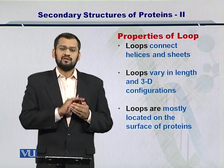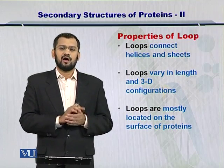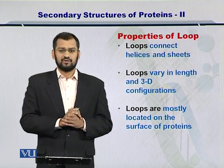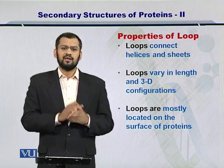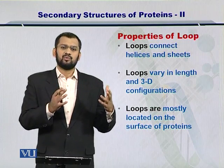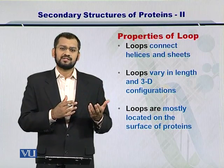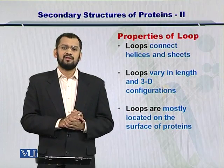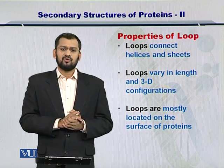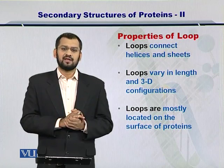Importantly, these loops that bring together alpha helices and beta sheets are mostly located on the surface of the protein. The surface of the protein is exposed to the outer world and therefore can have interactions with the external world or other proteins. Therefore, loops gain a lot of importance in that aspect.